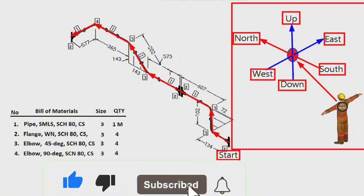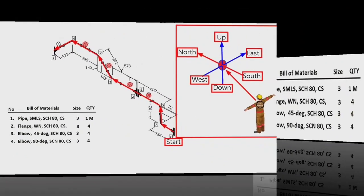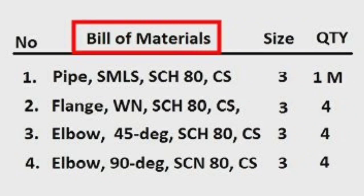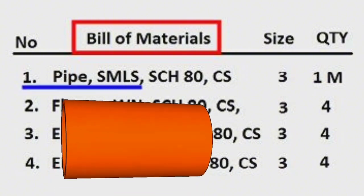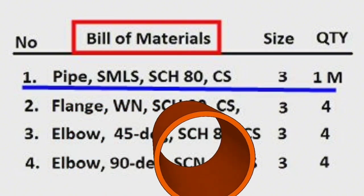Let's find out the list of materials used in this drawing. Detail number 1 was used in several places in the pipe drawing. This is the bill of materials. Detail number 1: pipe, seamless type, wall thickness schedule 80, carbon steel material, size is 3 inches, total quantity is 1 meter.